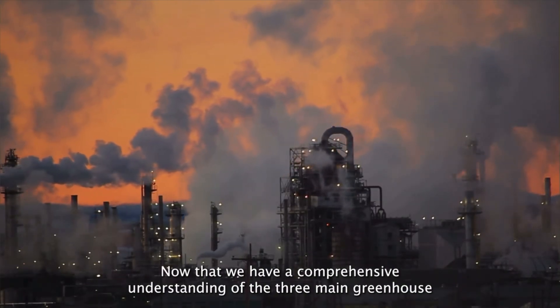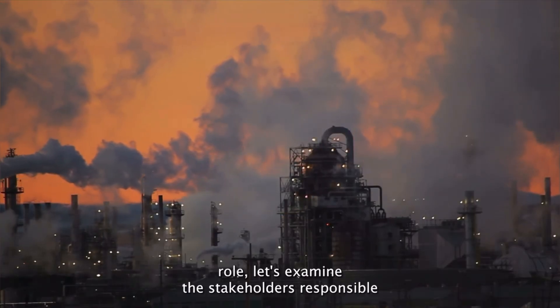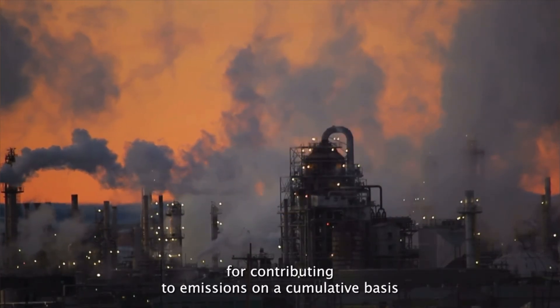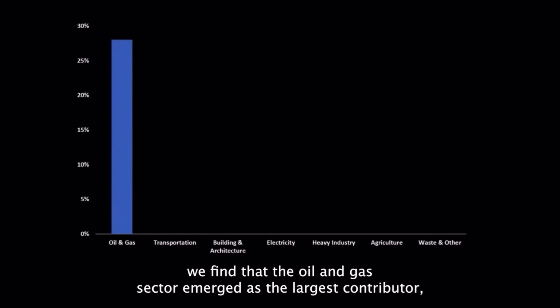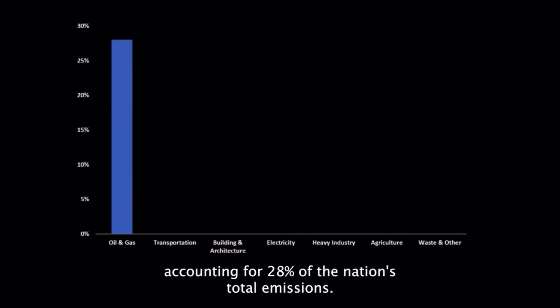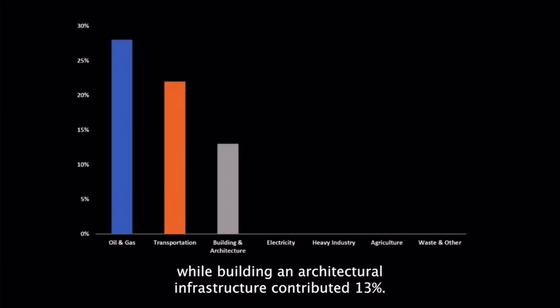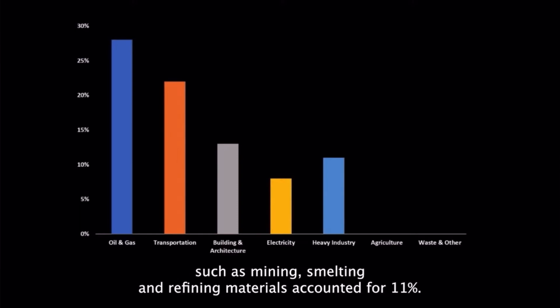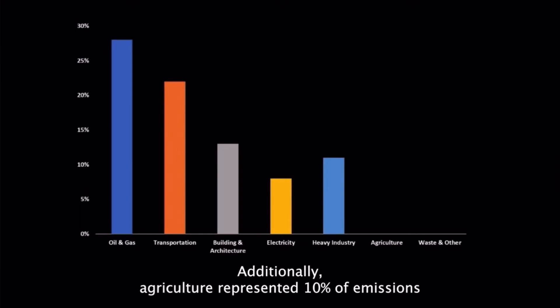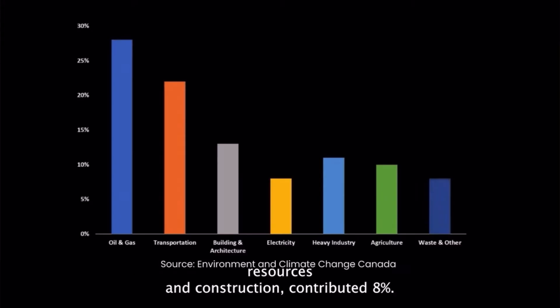Now that we have a comprehensive understanding of the three main greenhouse gases, common sources, and a quick overview of the water sector's role, let's examine the stakeholders responsible for contributing to emissions on a cumulative basis. When evaluating greenhouse gas emissions by economic sector in Canada for the year 2021, we find that the oil and gas sector emerged as the largest contributor, accounting for 28% of the nation's total emissions. Transportation accounted for 22%, buildings and architectural infrastructure contributed 13%, electricity generation made up 8%, and heavy industries such as mining, smelting, and refining materials accounted for 11%. Additionally, agriculture represented 10% of emissions, and waste management and other sectors including forest resources and construction contributed 8%.